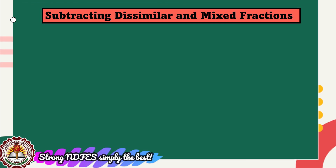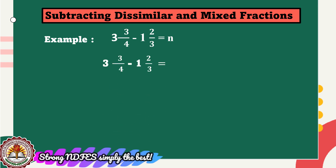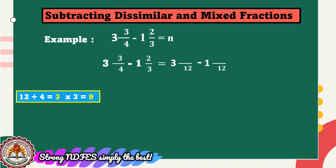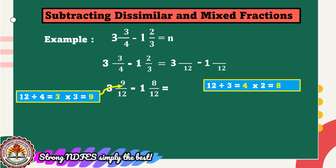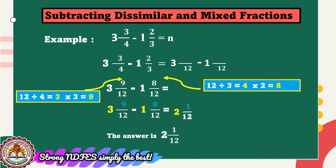Let us have an example of subtracting dissimilar mixed fractions. Example: 3 and 3 fourths minus 1 and 2 thirds equals n. The denominators 4 and 3 are not the same. The LCD of 4 and 3 is 12. Divide: 12 ÷ 4 = 3, then 3 × 3 = 9. Next, 12 ÷ 3 = 4, then 4 × 2 = 8. Subtract the whole numbers: 3 − 1 = 2. Subtract the numerators: 9 − 8 = 1. Copy the denominator 12. Our answer is 2 and 1/12, already in the lowest term.